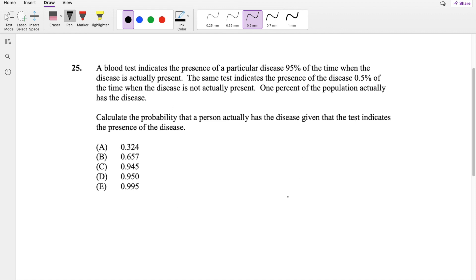Okay, assuming you already attempted it, let's just dive right in. So a blood test indicates the presence of a particular disease 95% of the time when the disease is actually present. So let's say this is actually present and you test positive.